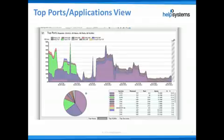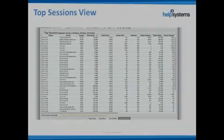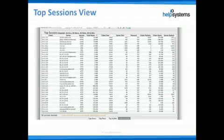InterMapper Flows also shows the top VLANs tab. I'm not going to show this today because our network only has one VLAN, so it's not very interesting — just a single color. But if there were more VLANs, you would get a similar graph showing the traffic for each of them. The top sessions view shows the top 50 sessions by traffic volume for the time interval displayed, which is useful for a more detailed analysis.